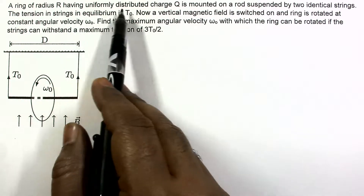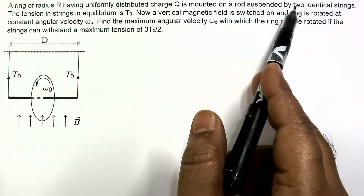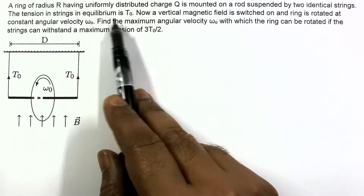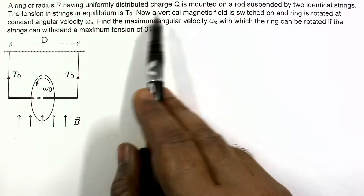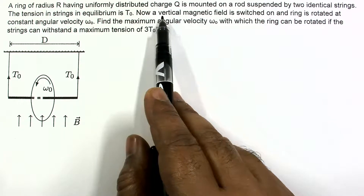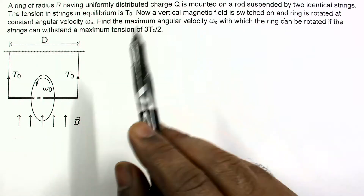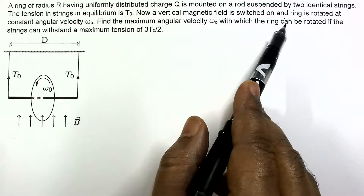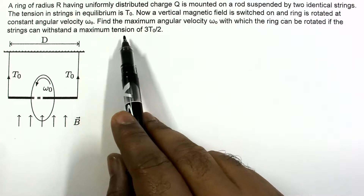In this problem, a ring of radius R having uniformly distributed charge Q is mounted on a rod suspended by two identical strings. The tension in the strings in equilibrium is T0. Now a vertical magnetic field is switched on. After switching the magnetic field, the ring is rotated at constant angular velocity ω₀. Find the maximum angular velocity ω₀ with which the ring can be rotated if the strings can withstand a maximum tension of 3T₀/2.